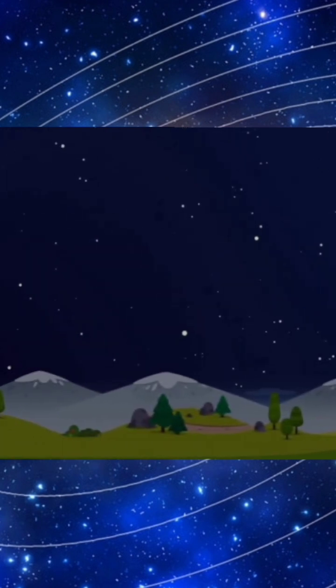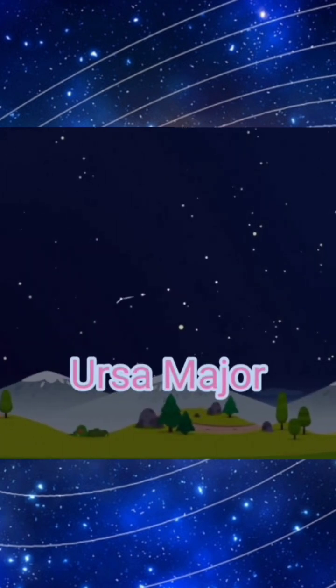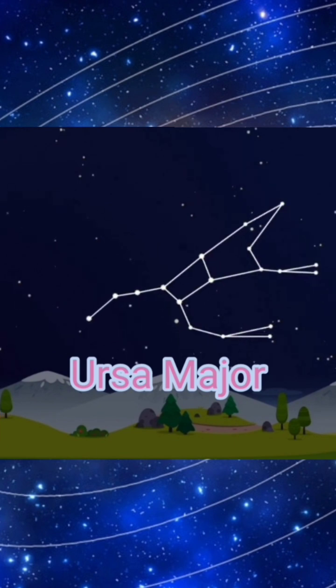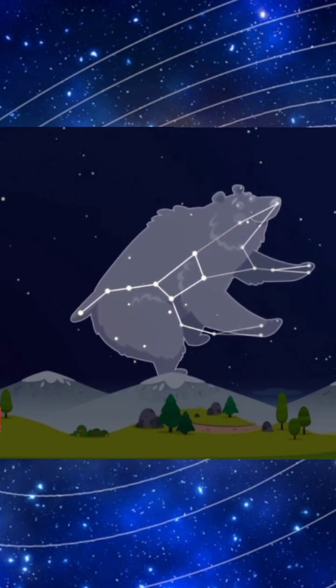One of the most well-known constellations is called Ursa Major, the Big Dipper. It means larger bear in Latin.